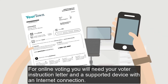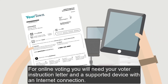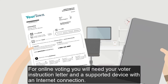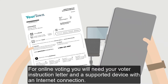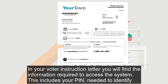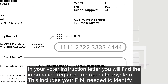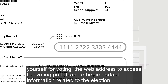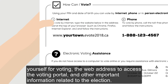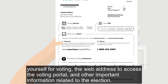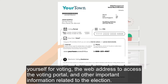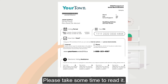For online voting, you will need your voter instruction letter and a supported device with an internet connection. In your voter instruction letter, you will find the information required to access the system. This includes your PIN, needed to identify yourself for voting, the web address to access the voting portal, and other important information related to the election. Please take some time to read it.